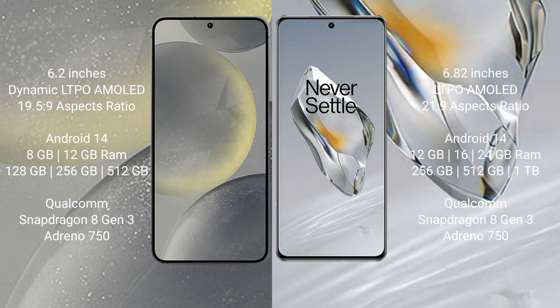Samsung Galaxy S24 comes with 8GB and 12GB RAM options, and 128GB, 256GB internal storage. It is powered by the Qualcomm Snapdragon processor.